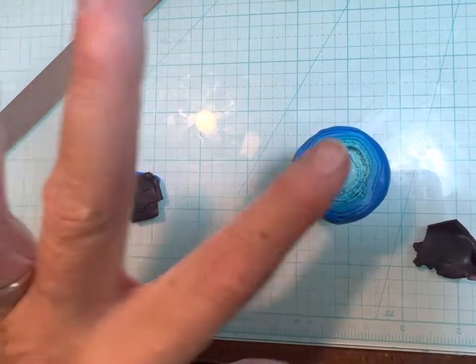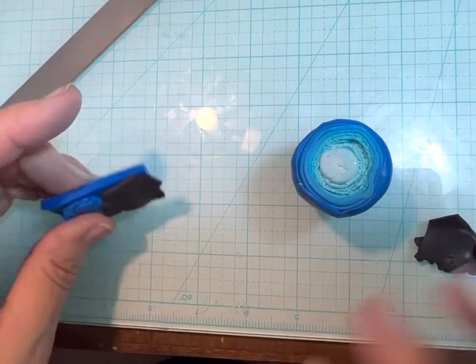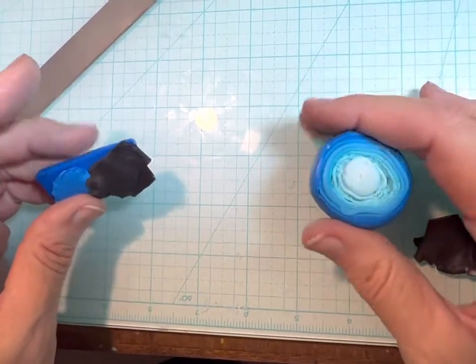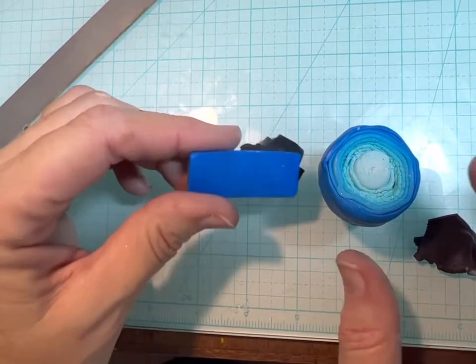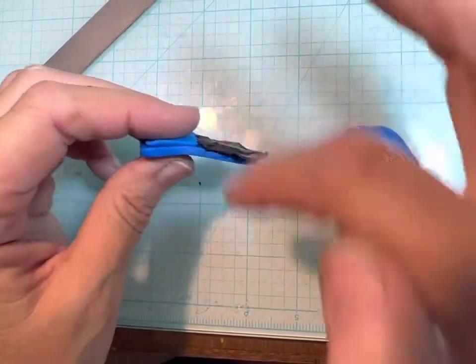I'm back, that's what the bullseye cane looks like. But before I start reducing it down, I'm going to mix this blue with some of this black to just make it a really deep dark blue and wrap it around the cane.